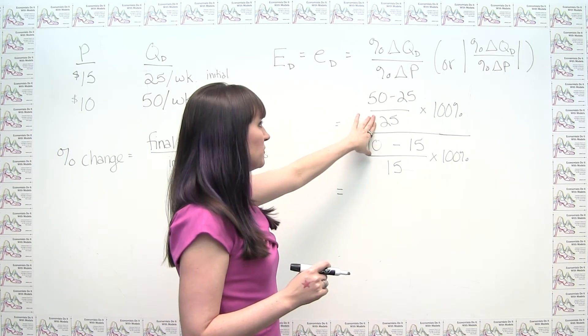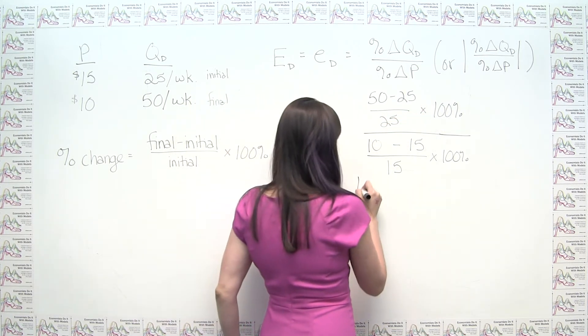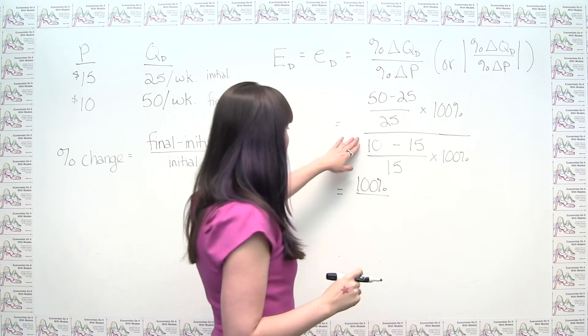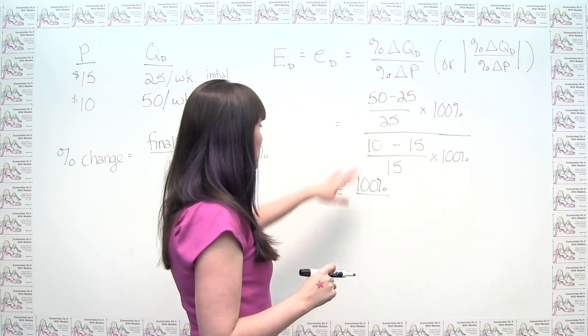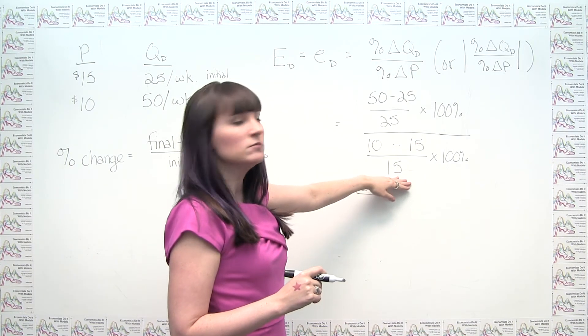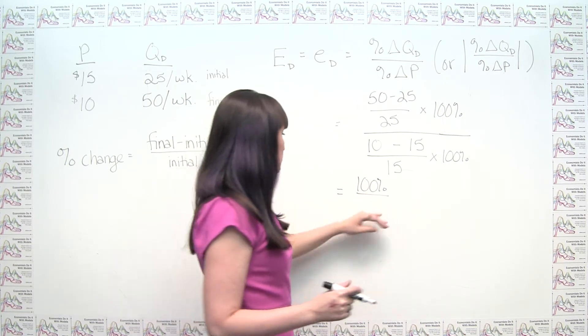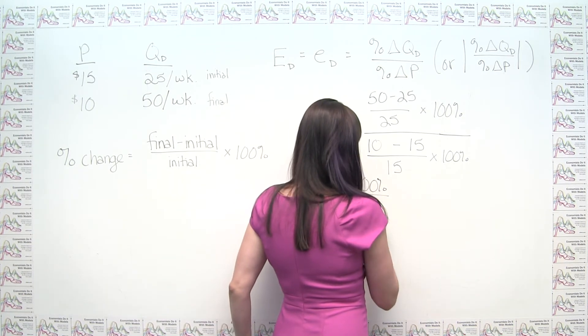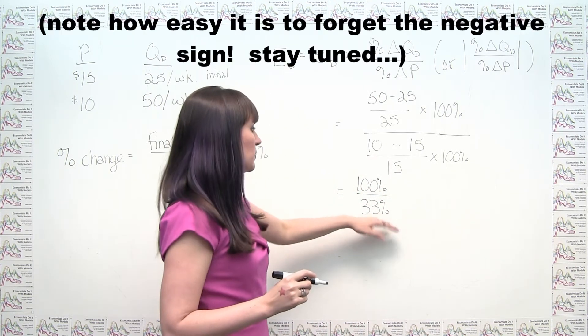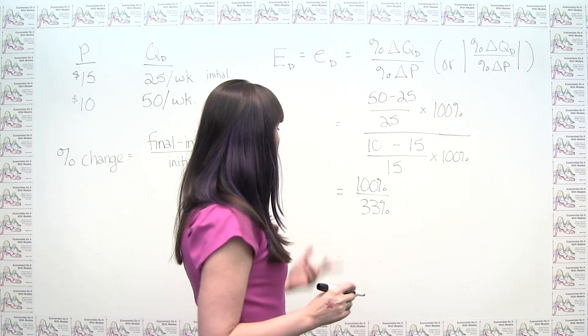We can see here, 50 minus 25 is 25. Divided by 25 is just 1. Times 100% is just 100%. 10 minus 15 is negative 5. Divided by 15 is negative 1 third times 100%. That is about 33%. It's in fact 33.3333333 repeating. And if I were to divide these, I would get a price elasticity of demand of 3.